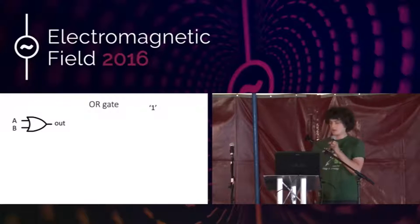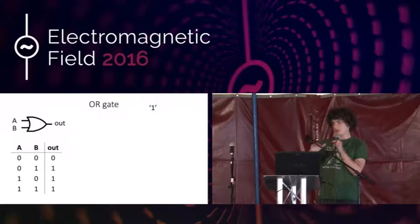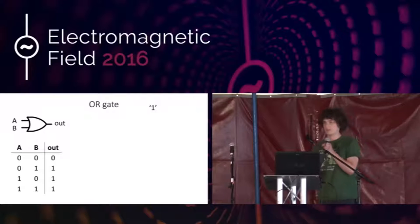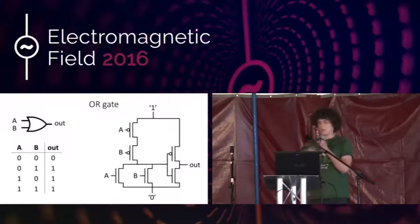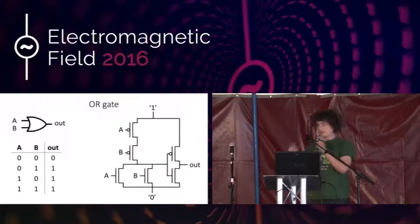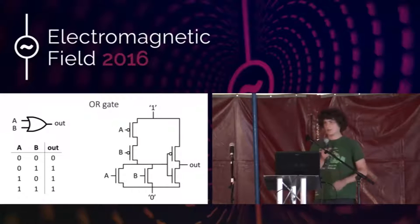We can do the same thing for the OR gate. Its truth table shows the output is always one except when both inputs are zero — equivalently, the output is one when either one of the inputs is one. If we make it with transistors, we get something very similar to the AND gate, but now the PFETs are connected in series and the NFETs are connected in parallel. So now we have three basic building blocks: the AND gate, the OR gate, and the NOT gate, and this is actually enough to make any logical circuit you want.